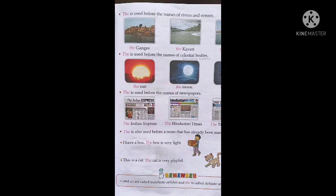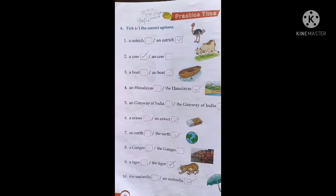Now let's move to page 36. You have to tick the correct option. Ap logo ko jo correct option hai us ko tick lagana hai. First one: 'a ostrich' or 'an ostrich' — ap logo ko batana hai is mein 'a' lagega ya phir 'an' lagega. One through ten complete karein.